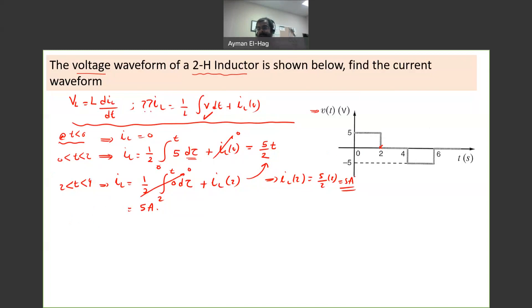Now the third interval, T less than 6, greater than 4. IL equals 1 half, integration from 4 to T. The voltage equals minus 5 d tau plus IL at 4. I can take this out. So this becomes minus 5 over 2, and the integration becomes tau from 4 to T.